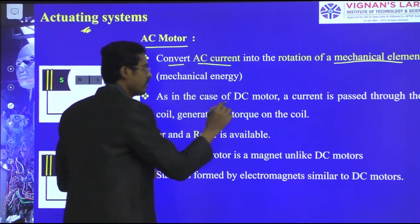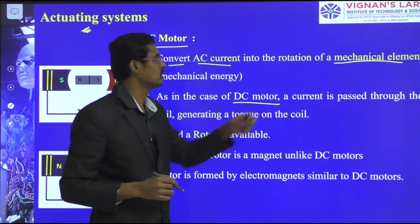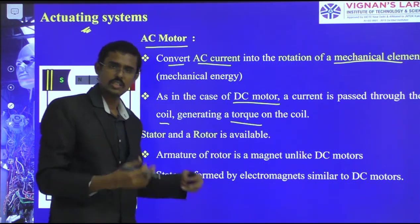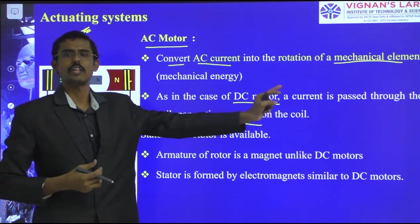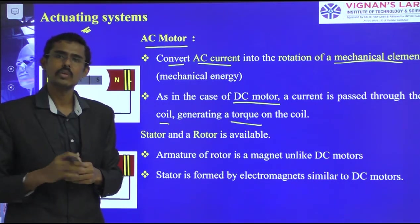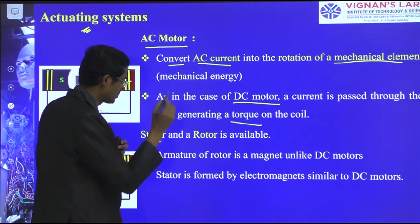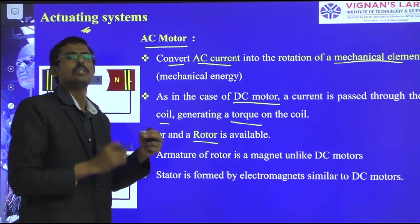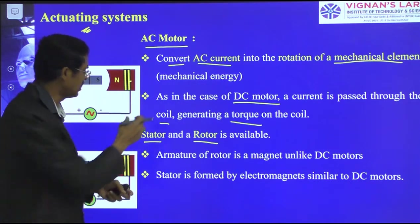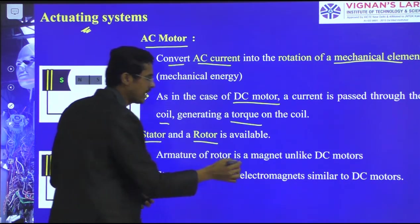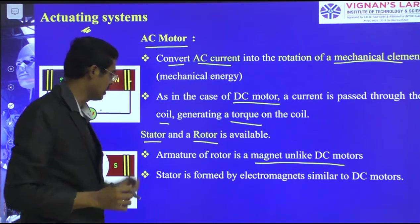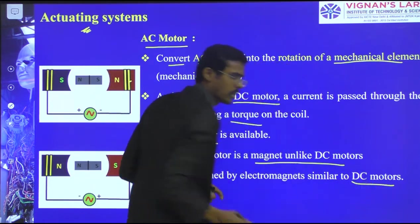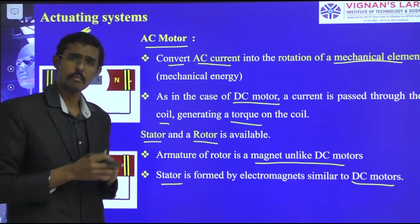In the AC motor, as in the case of a DC motor, current passes through the coil generating a torque of rotation, which is connected to the shaft and we take the output. Here we have two main components: the stator and the rotor. The stator is a fixed one and the rotor rotates inside the cylindrical AC motor. The rotor armature is magnetic, unlike DC motors, and the stator is formed by electromagnets.